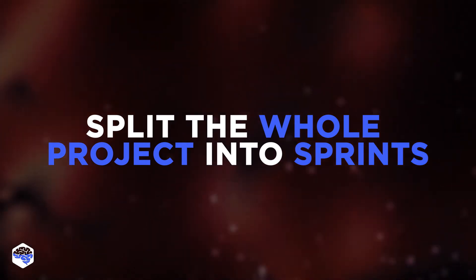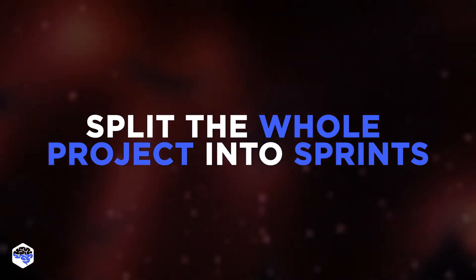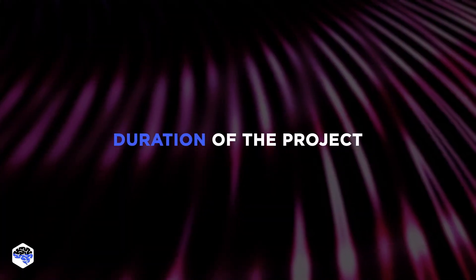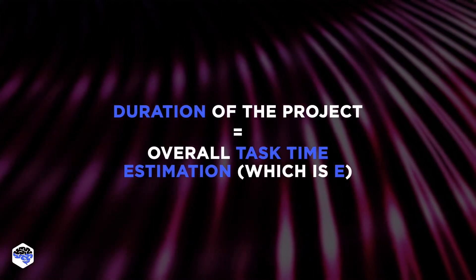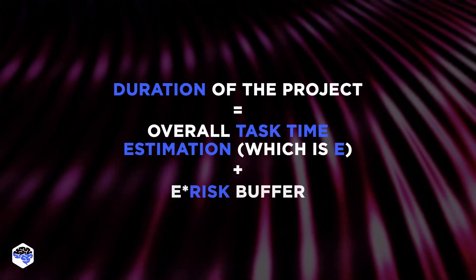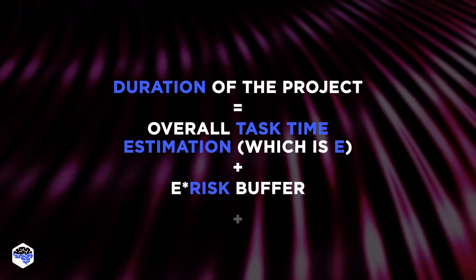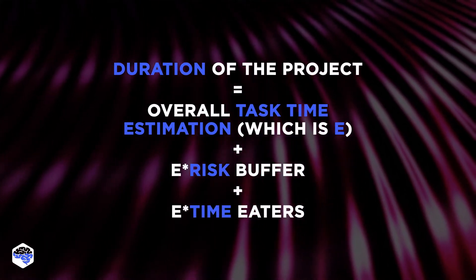Gathering the findings of the steps from above, you'll get the formula: Duration of the project equals overall task time estimation (E), plus E-risk buffer, plus E-time eaters.